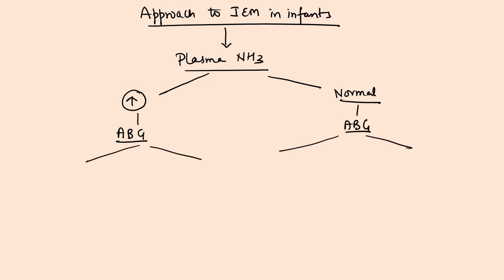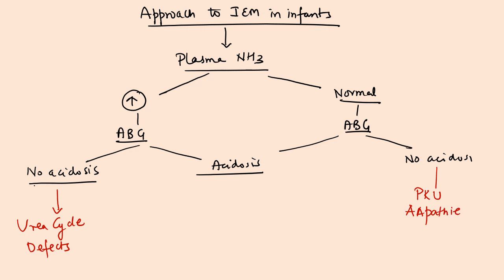If the plasma ammonia is high but there is no acidosis, you will think of urea cycle defects. If plasma ammonia is high and acidosis is present, you will think of organic acidemias. If plasma ammonia is normal but there is no acidosis, you will think of galactosemia and peroxisomal disorders like Zellweger syndrome.